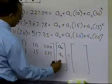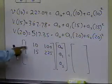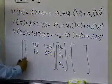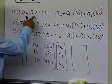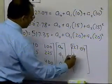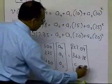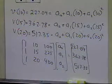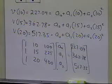The unknowns are a0, a1, and a2. Writing in matrix form, the coefficient matrix rows are [1, 10, 100], [1, 15, 225], and [1, 20, 400], and the right-hand side vector is [227.04, 362.78, 517.35]. Solving these three equations and three unknowns is left as homework — find a0, a1, a2 by any method of your choice.